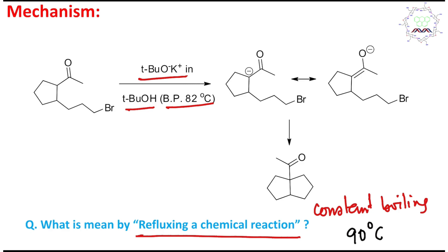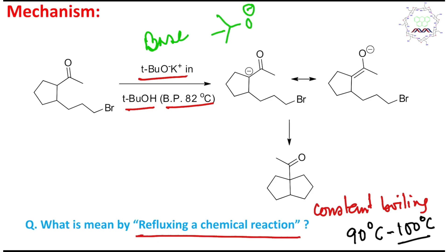So you can expect that this reaction is carried out at around 90 to 100°C under a reflux condenser. The reaction mixture temperature is 90 to 100°C based on my understanding. Now, what is tertiary butoxide? It is a strong base and cannot act as a nucleophile because of the bulkiness of the tertiary butyl group, so it can only act as a base.